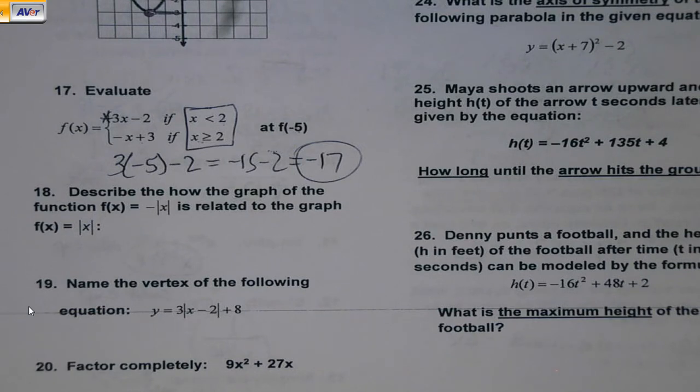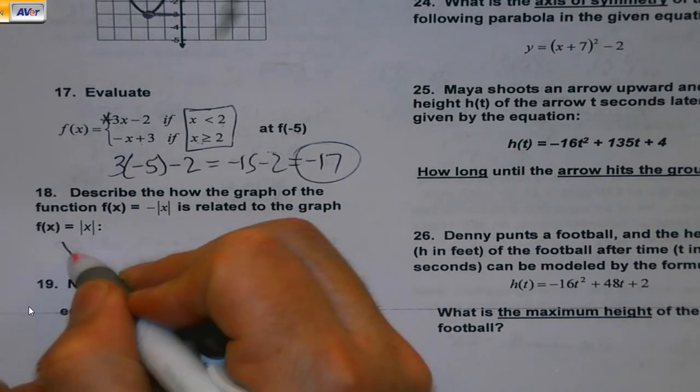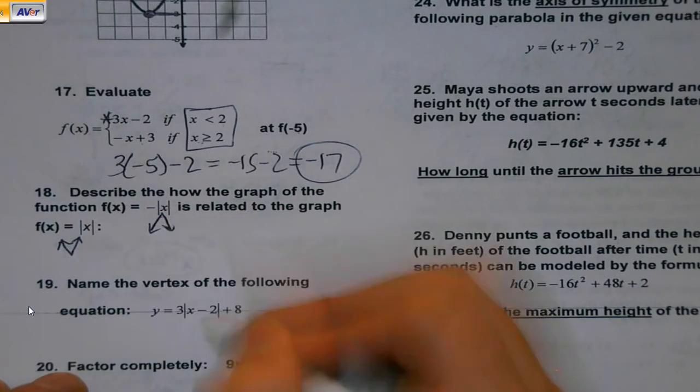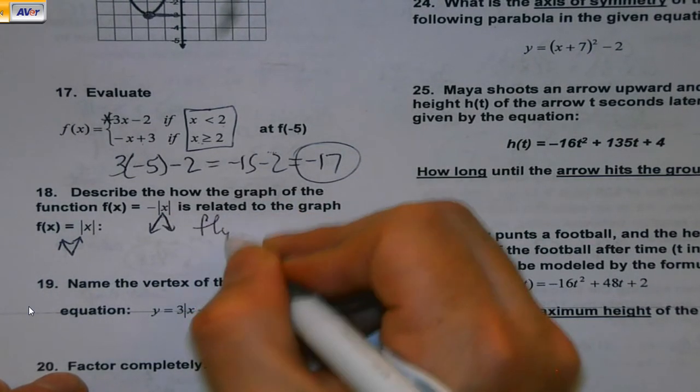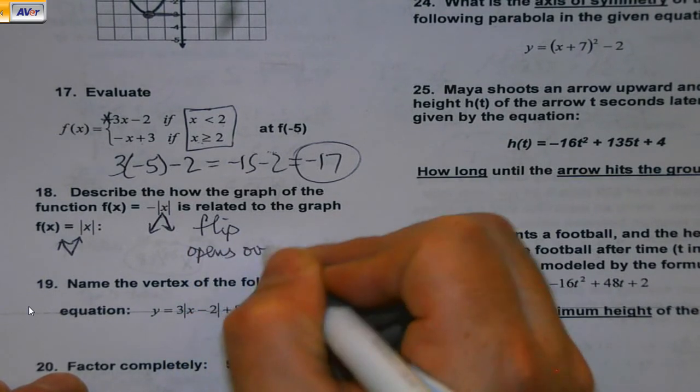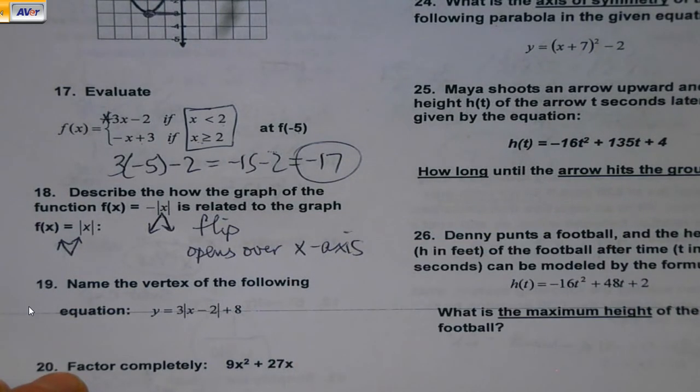Describe how the graph of the function f of x equals the negative absolute value of x is related to the graph f of x equals absolute value of x. Here, if there were shifts, you'd say the direction. But what does the negative absolute value of x do? Well, negatives flip because x normally opens up. You could say flip. You could say opens over x axis. But if it's left or right, which it may be, you just say shifted to the left three or to the right or whatever that happens to be. Because remember, whatever's inside the absolute value is my left, right. Whatever's outside is my up, down. And I just have to keep track of that.